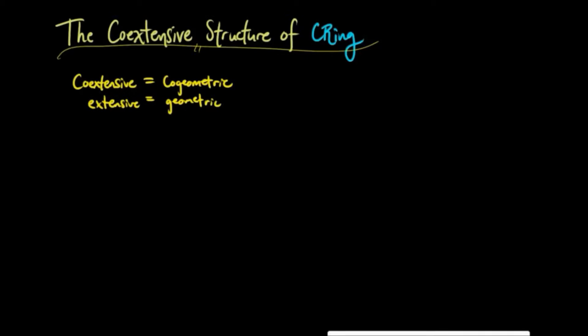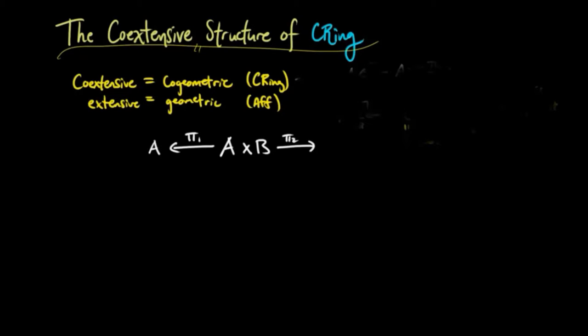And if you know anything about algebraic geometry, we can think of the coextensivity of commutative rings leading to the nice geometric properties of affine schemes. So to show that the category of commutative rings is coextensive, we have to show that product diagrams get preserved under pushouts.